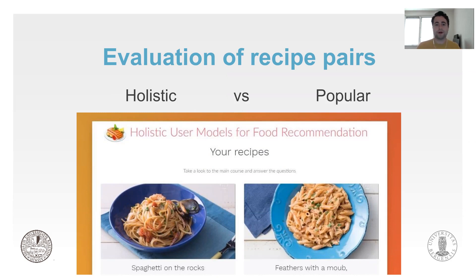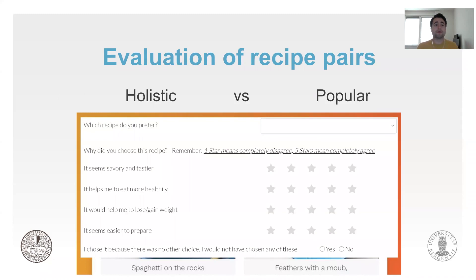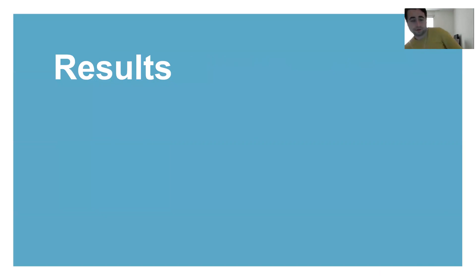Not only would we ask participants to choose between the recipes, but we would also ask them why — did they have taste-related reasons, health reasons, or other reasons to choose either recipe. In our analysis, we used these reasons or motivations to predict what types of recipes were chosen. We performed two different logistic regression analyses: one to predict whether holistic or popular recipes were chosen, and another to predict, per recipe type, what factors mattered for that choice.